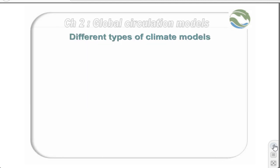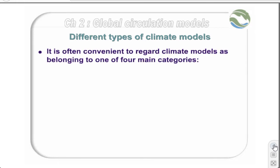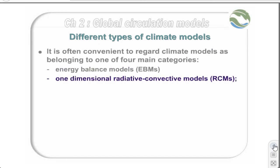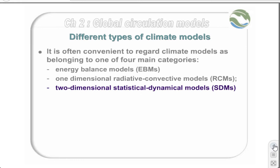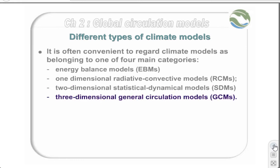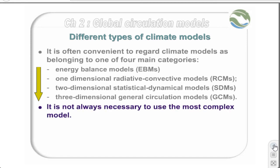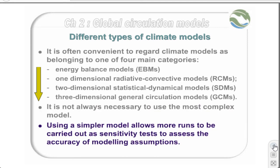A number of different models are used by climatologists. It is often convenient to regard climate models as belonging to one of four main categories: energy balance models, one-dimensional radiative convective models, two-dimensional statistical dynamical models, and three-dimensional general circulation models. These models are listed in increasing order of complexity and computational intensity. It is useful to remember that one need not always use the most complex model. Using a simpler model allows more runs to be carried out as sensitivity tests to assess the accuracy of modelling assumptions. Each of the different model approaches therefore plays an important role in determining our understanding of the interaction of climatic processes.